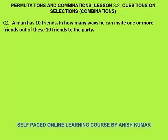Question 1: a man has 10 friends. In how many ways can he invite one or more friends out of these 10 friends to the party? He can invite one friend, or 2 friends, or 3 friends, and so on up to 10 friends. In how many ways can he invite one friend? It's the same as selecting one friend out of 10 friends, which can be done in 10C1 ways.